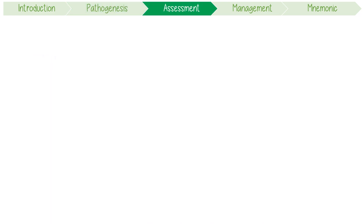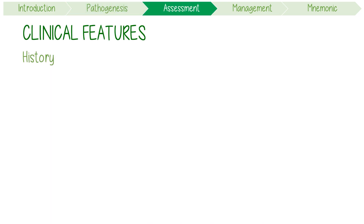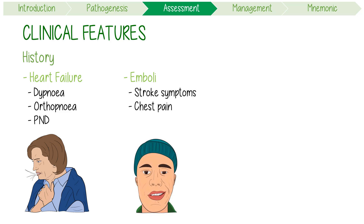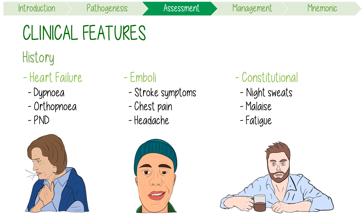Let's focus on assessment and clinical features. On history, you should inquire about features of heart failure such as dyspnea on exertion, orthopnea, and paroxysmal nocturnal dyspnea. Features suggestive of emboli, like stroke symptoms, chest pain, and headache. And finally, constitutional symptoms like night sweats, malaise, and fatigue.